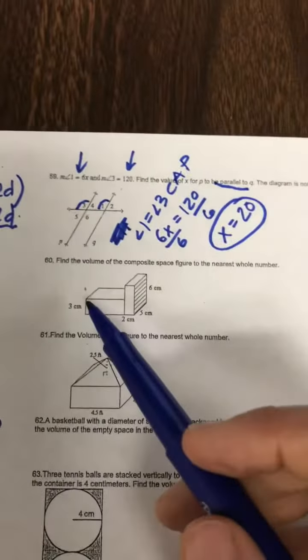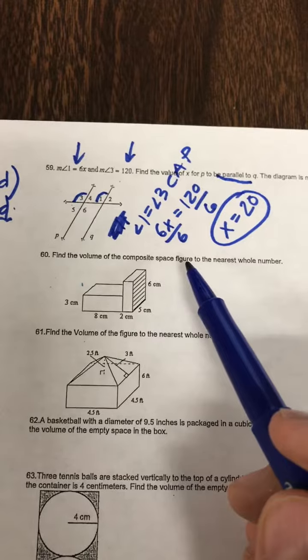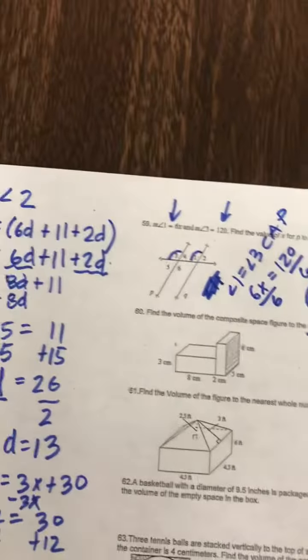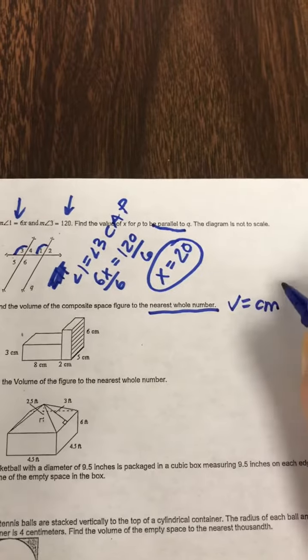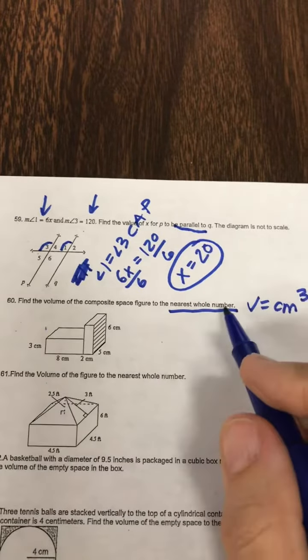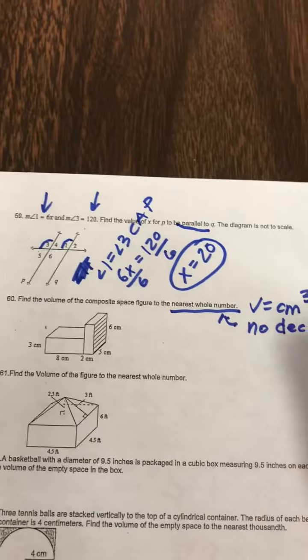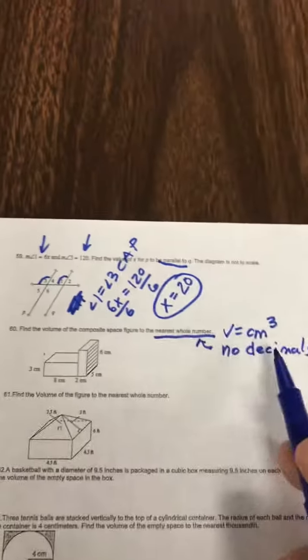All right, next one. It says, what's the volume of the composite space round to the nearest whole number? So volume is going to be in centimeters cubed, and then they said nearest whole number means no decimals. So let's take a look.